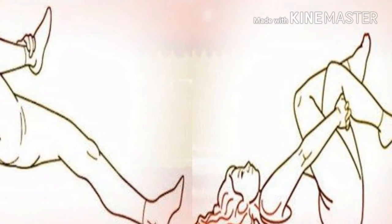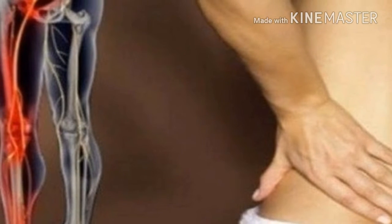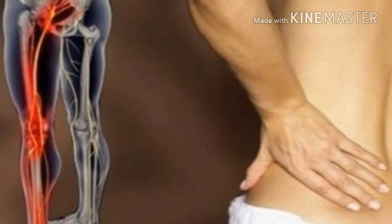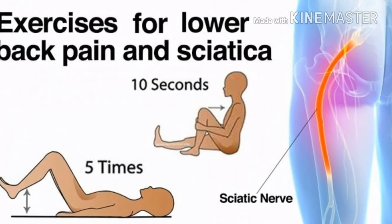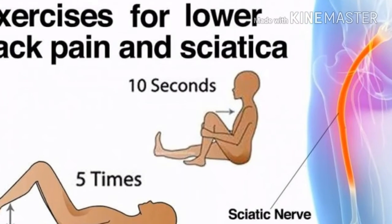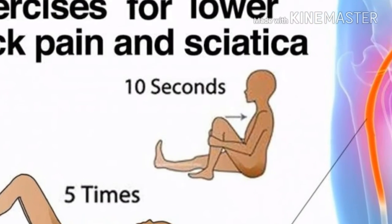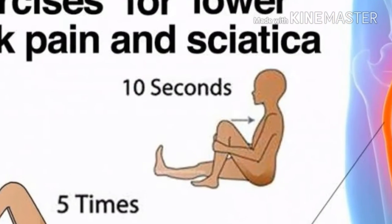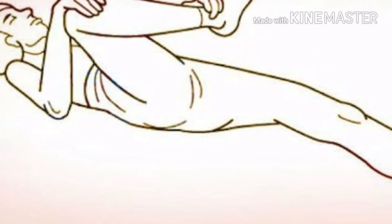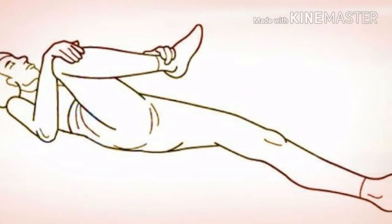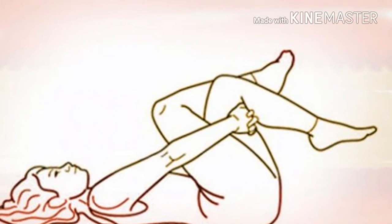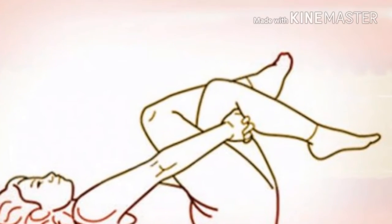Sometimes it's mistaken for lower back pain or leg cramps, and when it does, the tendency is to stay in bed and take ibuprofen or other pharmaceuticals. Sciatica is a symptom of another problem that is pinching or creating pressure on the sciatic nerve — the largest single nerve in the human body. It runs down each leg from the lower spine all the way to the feet, providing movement, feeling, and strength.